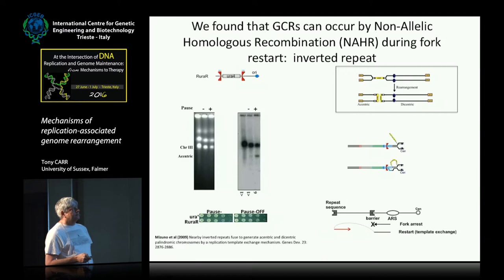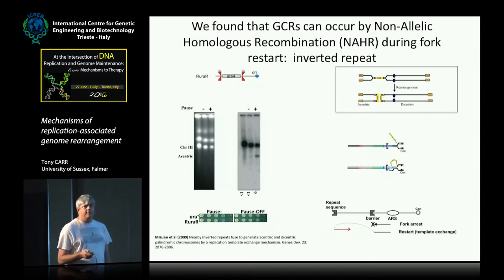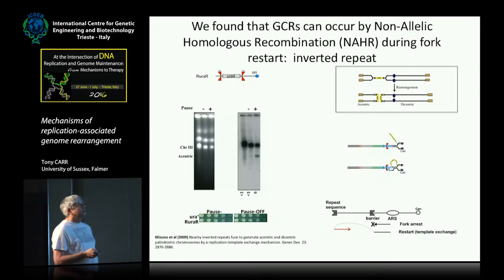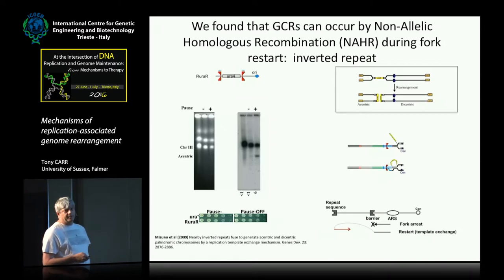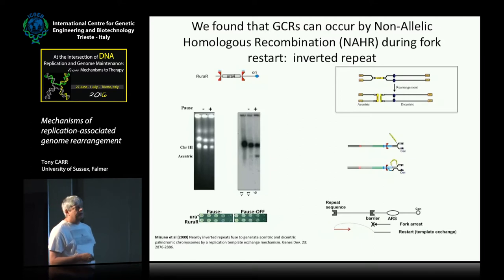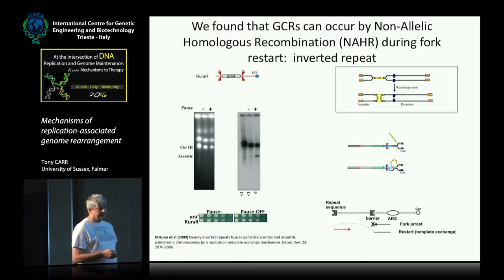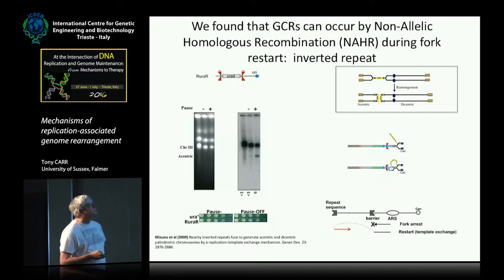We went on to show you could take this second copy of the sequence, put it on another chromosome, and get a low level of translocations. You could put it as a direct repeat and delete the bit in the middle, and there was a relationship between the distance these sequences were apart and the frequency at which they generated non-allelic recombination events.